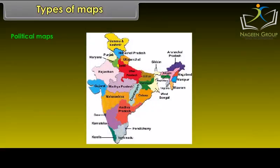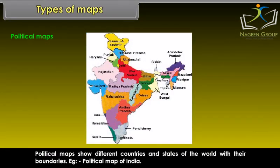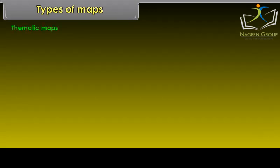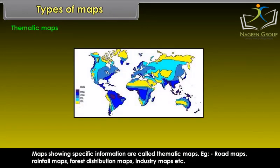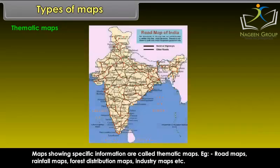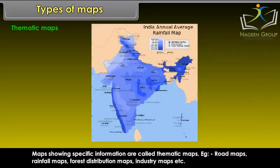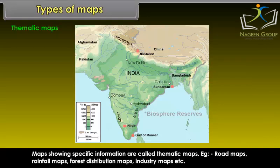Political Maps show different countries and states of the world with their boundaries. Thematic Maps show specific information and are called thematic maps. Examples include Road Maps, Rainfall Maps, Forest Distribution Maps, and Industry Maps.